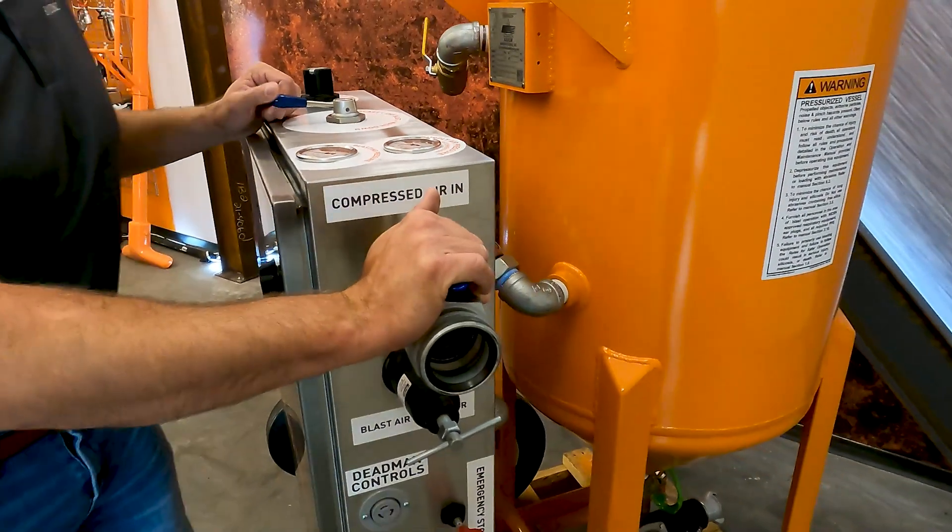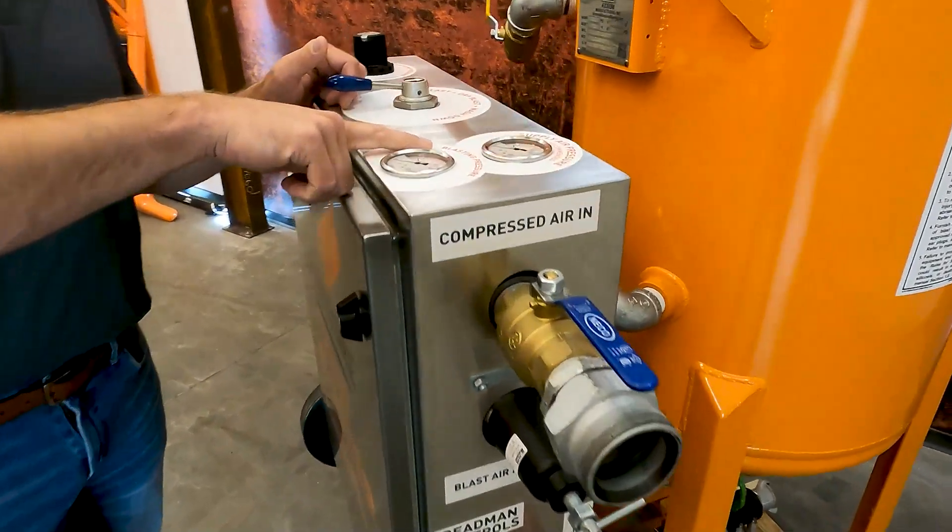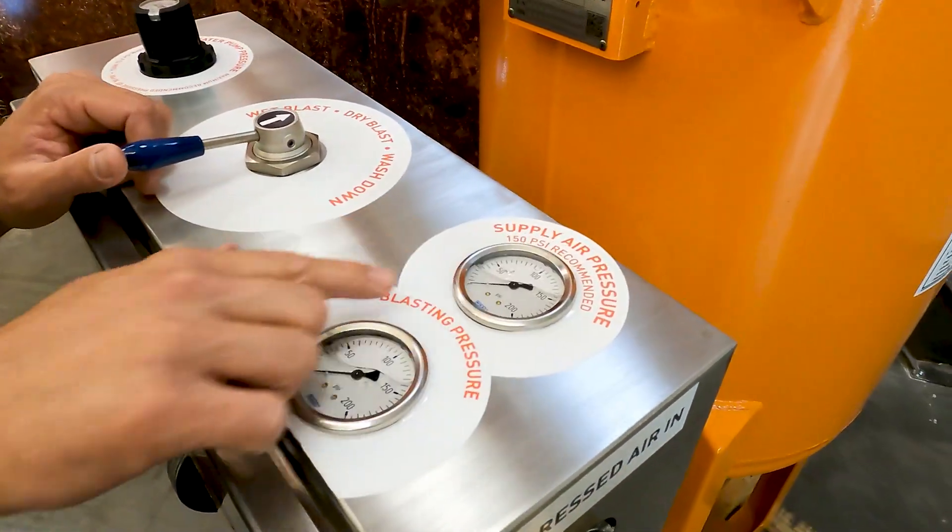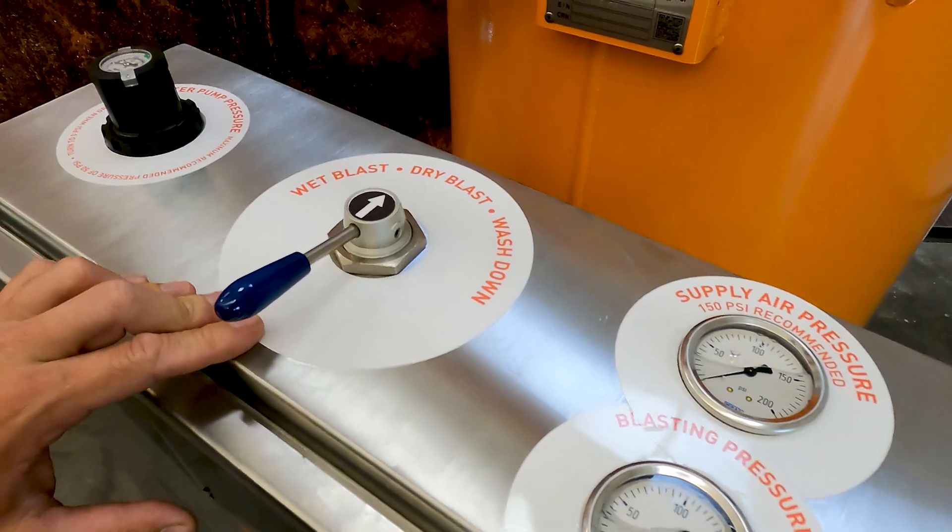So the first thing you're going to see is the air in. This is your compressed air from the compressor, and on the top of the unit here we have supply air pressure, blasting pressure, the dials for what you would want to blast with.